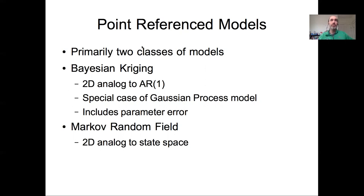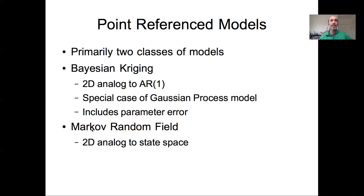The other approach to spatial modeling is analogous to our state space time series models. A two-dimensional analog to that would be what's known as Markov random field models. To start, I'm going to focus on these spatial covariance models.